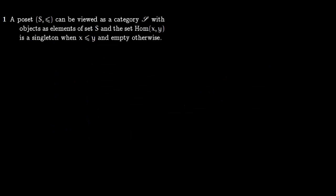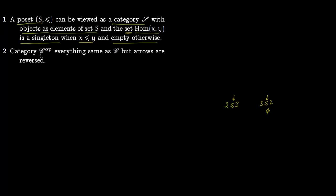Some more examples. A partially ordered set can be viewed as a category: objects are elements of the set S, and the set of morphisms from a to b is a singleton {(a,b)} if a ≤ b, and empty otherwise. So the partial order relation becomes a morphism.